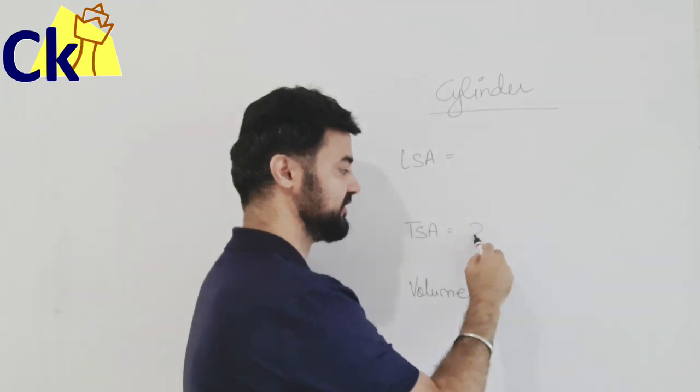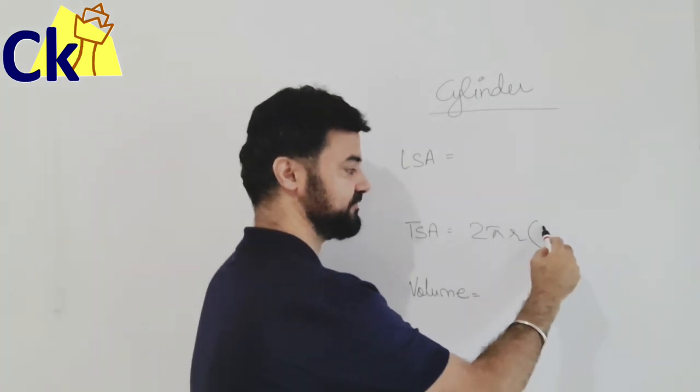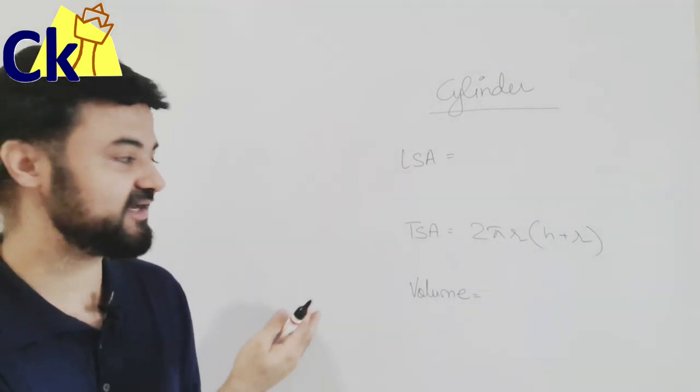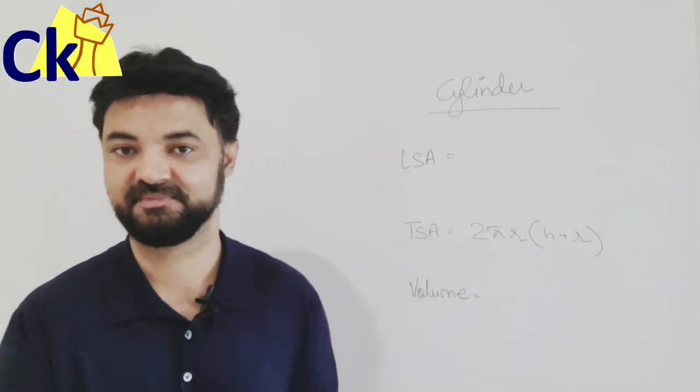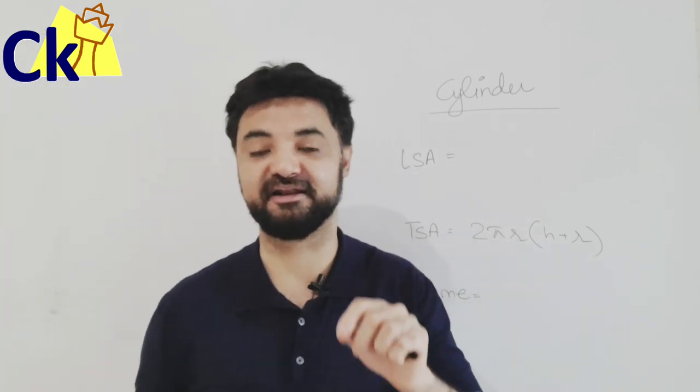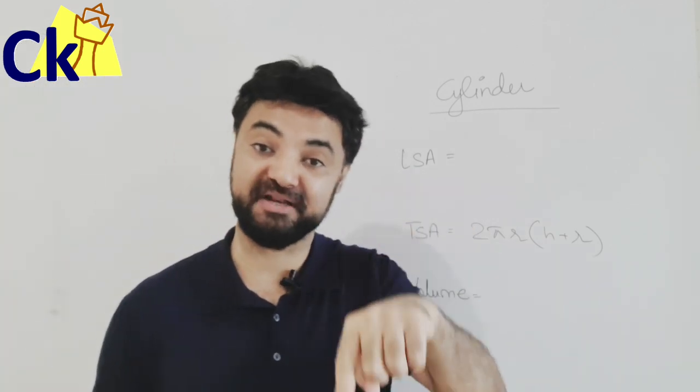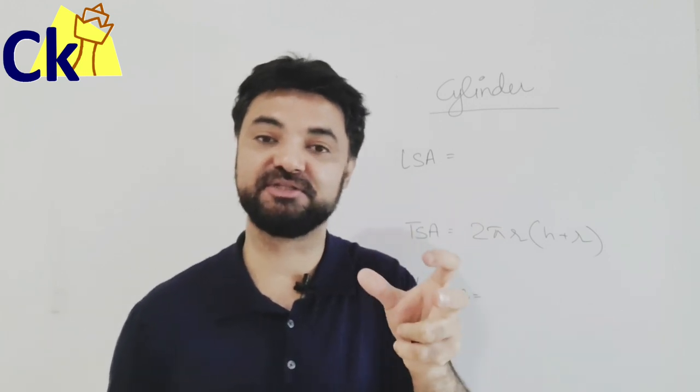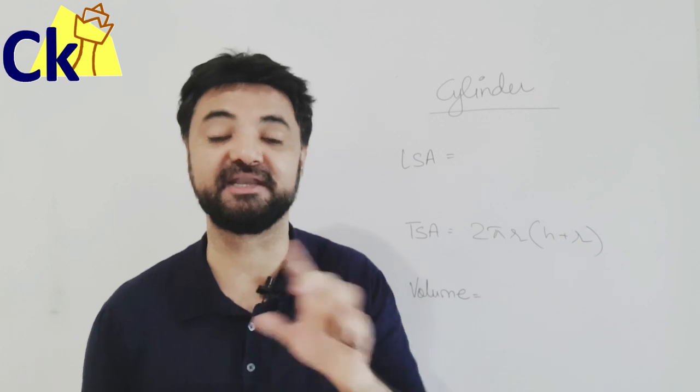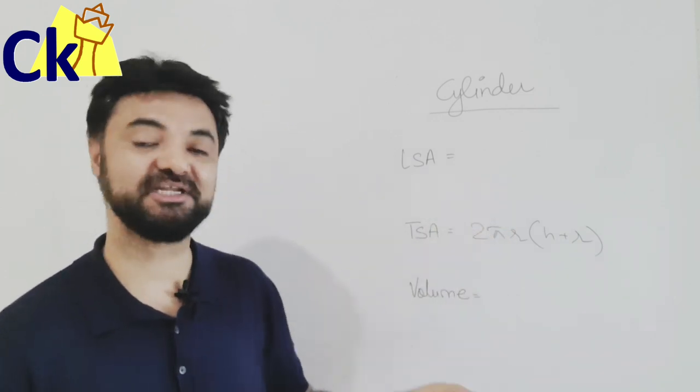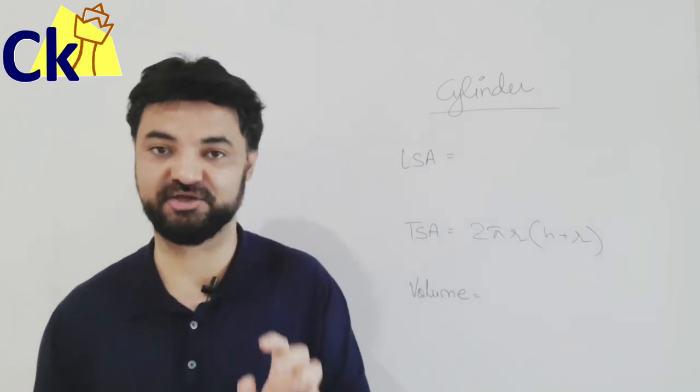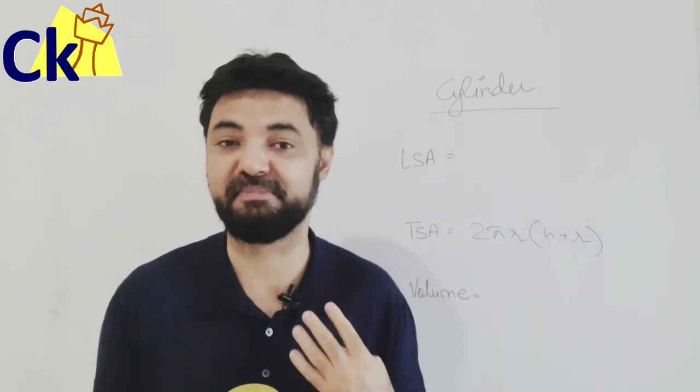For example, total surface area: anyone remember the formula 2πrh + r? If you remember 9th-10th class, this used to be the pain. This is cylinder's formula - there are 10 different diagrams: cone, prism, pyramid, square prism, hexagonal prism. So there are 10 into 3, that's 30 formulas you have to remember.